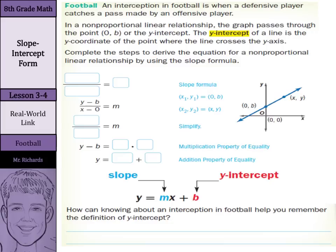Our first step is to write the slope formula. Slope is y2 minus y1 over x2 minus x1 equals m. They made a substitution: x1, y1 was the point (0, b), and x2, y2 was just the (x, y) out there. So y2 was y, y1 was b, x2 was x, and x1 was 0. They took these points and made their substitutions in.